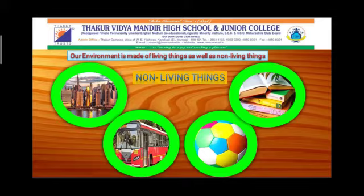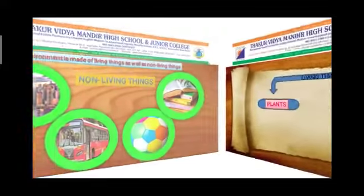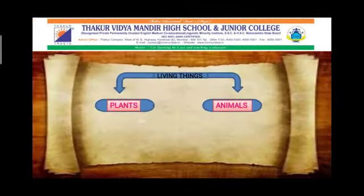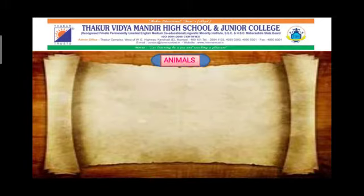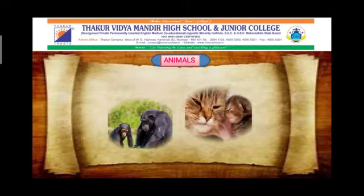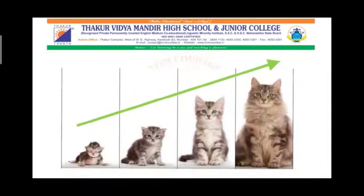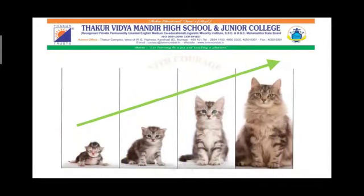Living things are of two kinds — plants and animals. First of all, let us learn about animals. Animals move, eat, grow, and give birth to babies. See this picture — it shows the stages of a kitten growing into a fully grown-up cat.